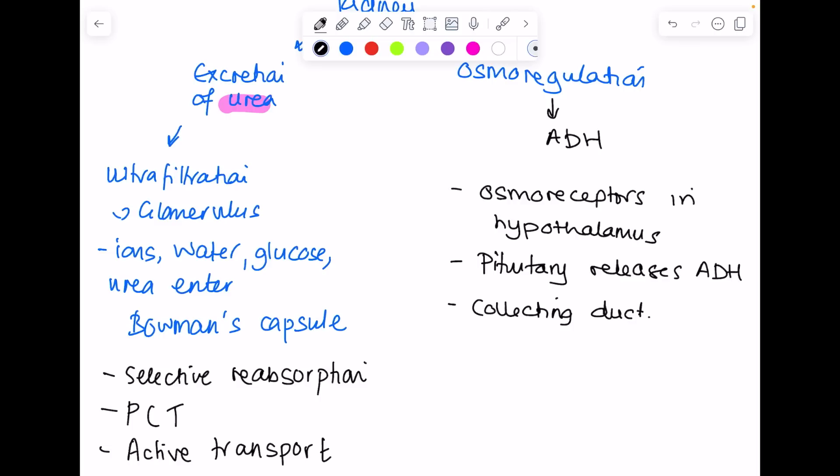Take a scenario where we haven't had a lot of water to drink. Osmoreceptors in the hypothalamus detect low water levels. The pituitary gland releases lots of ADH. The collecting duct walls are more permeable, meaning more water is reabsorbed back into the blood, meaning less water is available to make urine.